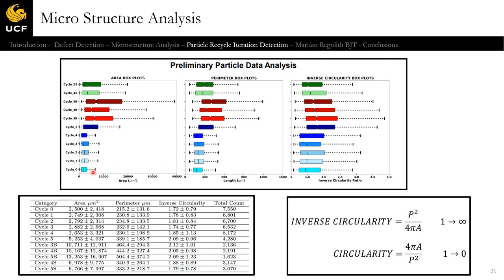Looking at average area distribution from cycle 0 to cycle 5, we see a slight increase in the skew towards larger areas, though cycle 4 shows a slight drop — somewhat inexplicable, possibly due to experimental errors in this first collection of data. Cycle 5 shows a large increase. Cycles 3B, 4B, 5B, 4S, and 5S show significantly larger areas. The same pattern flows through perimeter and inverse circularity measurements.